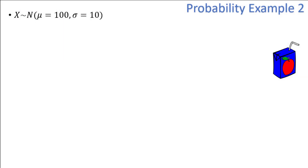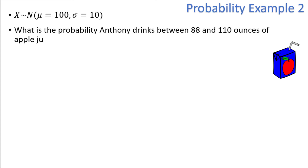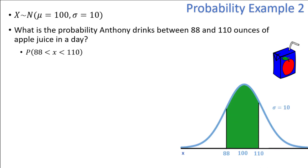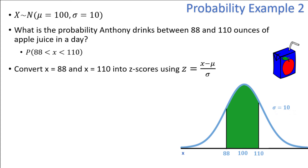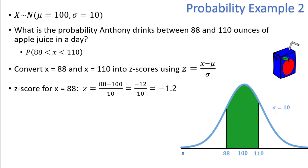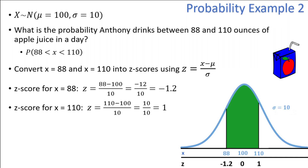Let's try another one. What is the probability Anthony drinks between 88 and 110 ounces of apple juice in a day? This can be written as the probability 88 is less than x is less than 110. Graphically, here is the area that we are trying to solve for, which I have shaded in green. Now we need to convert x equals 88 and x equals 110 into two z-scores. The z-score corresponding to 88 is 88 minus 100 divided by 10, which equals negative 1.2. The z-score corresponding to 110 is 110 minus 100 divided by 10, which is equal to 1. The probability 88 is less than x is less than 110 becomes the probability negative 1.2 is less than z is less than 1.